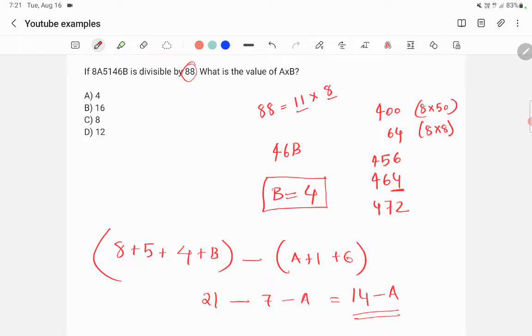The possible values for 14 - a divisible by 11 are: 0, 11, 22, etc. If 14 - a = 0, then a = 14, but a is a single digit, so it cannot be 14. If you put 14 - a = 11, you get a = 3.